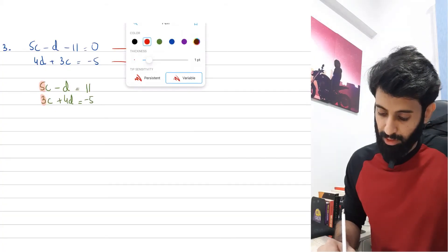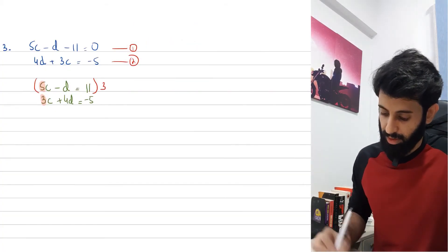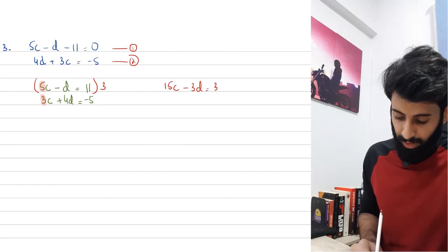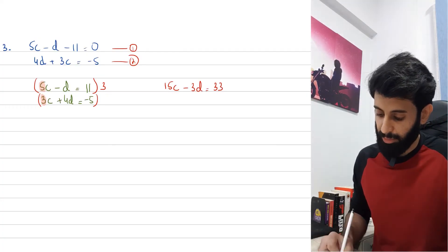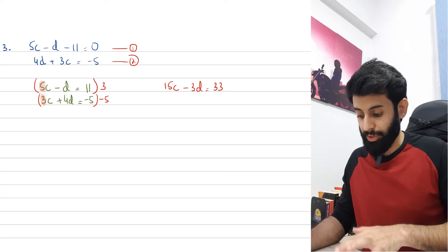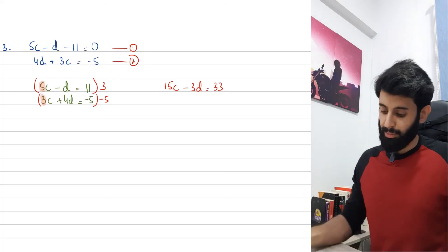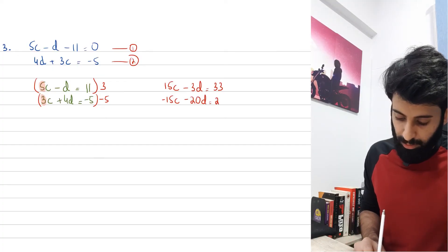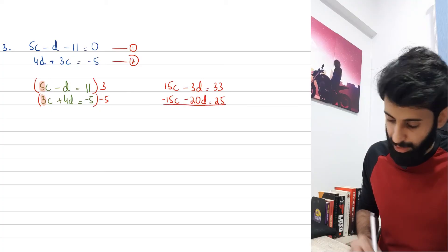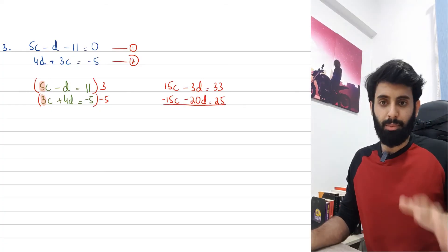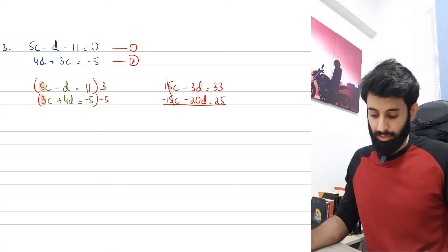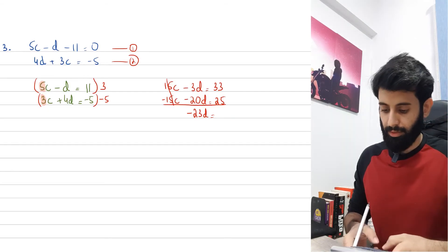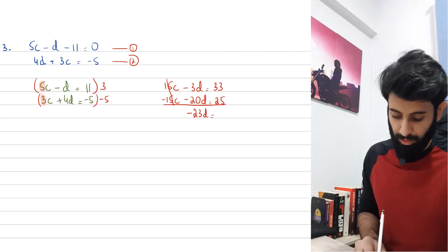I want the coefficient of c to be positive 15 in one equation and negative 15 in the other. I multiply the first equation by 3, giving 15c minus 3d equals 33. For the second equation, I multiply by minus 5 to get minus 15c minus 20d equals positive 25. Be very careful with signs, especially when multiplying by a negative number. Adding the two equations: 15c minus 15c cancels out, leaving minus 23d.